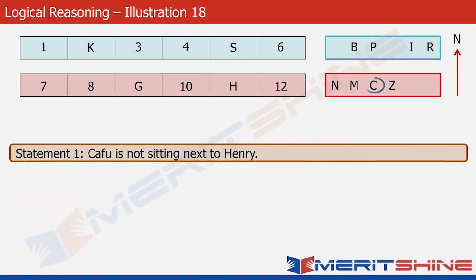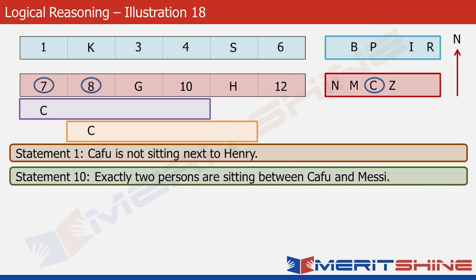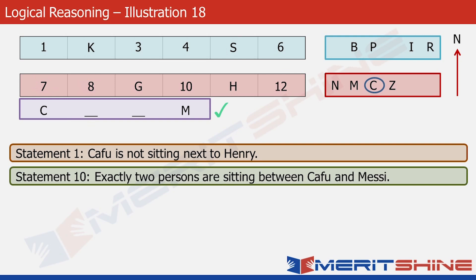Statement 1 says Kafu is not sitting next to Henry — positions 10 and 12 are next to Henry, so those are ruled out for Kafu. That leaves positions 7 and 8 as possibilities. Now statement 10: exactly two persons are sitting between Kafu and Messi. If Kafu is at position 7, Messi would be the third person to the right at position 10. If Kafu is at position 8, Messi would fall at position 11, which is already occupied by Henry — so that's not possible. Therefore Kafu must be at position 7 and Messi at position 10.